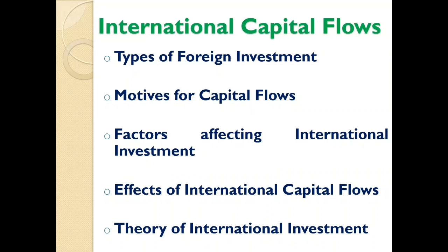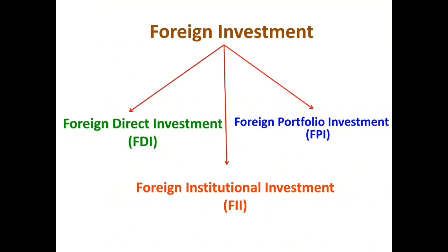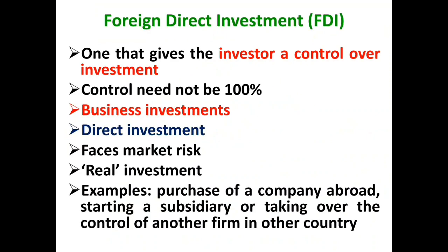Now let us explore the types of foreign investment. Broadly speaking, foreign investment is classified as foreign direct investment, foreign portfolio investment, and also foreign institutional investment. Foreign direct investment refers to investment in a foreign country in which the owner of the capital does have control over the investment. It is an investment that gives the investor control over the investment, even though this control need not be 100 percent. It's a direct investment, a real investment, a business investment which faces the market.